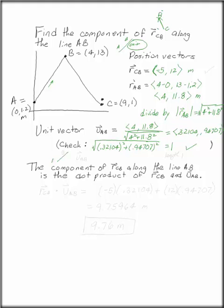So here's our line A to B. UAB is the unit vector along that line, is length 1. The component of RCB along the line AB is the dot product of the position vector up here, RCB, and the unit vector, UAB. So what we want to find is RCB dot UAB.